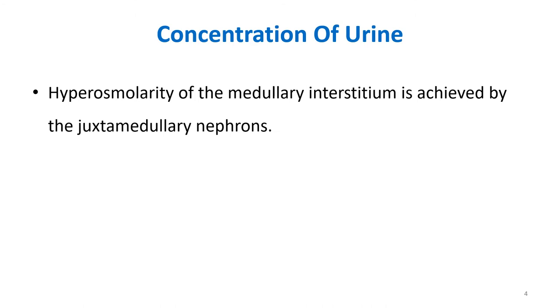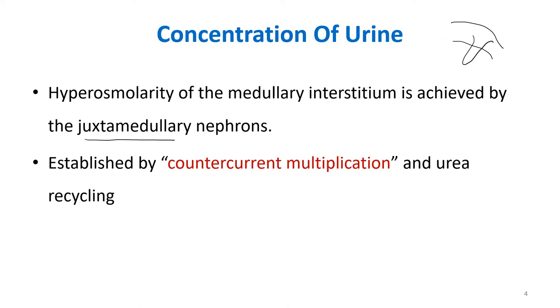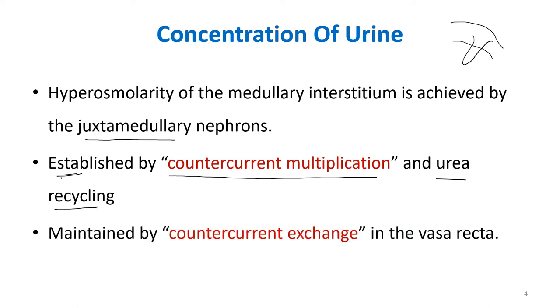How is this high concentration of renal medullary interstitial fluid obtained? It is achieved by the juxtamedullary nephrons, which have a long loop of Henle and are responsible for concentration of urine. This high osmolality is first established by countercurrent multiplication and urea recycling, whereas it is maintained by countercurrent exchange. You should understand that these are two different terms and each can be asked as a short note. Countercurrent exchange occurs in the Vasa Recta.